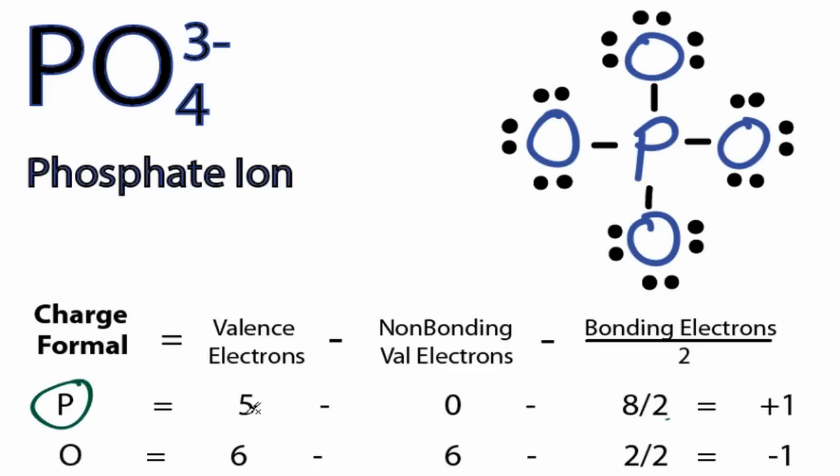For the Phosphorus on the periodic table, it has 5 valence electrons. All of these right here are involved in bonds, so we have 0 non-bonding but we have 8 bonding. We'll divide that by 2, and that gives us a plus 1 formal charge for Phosphorus.